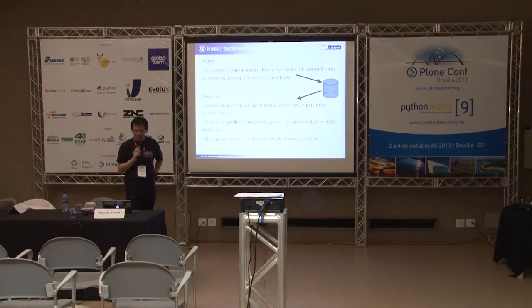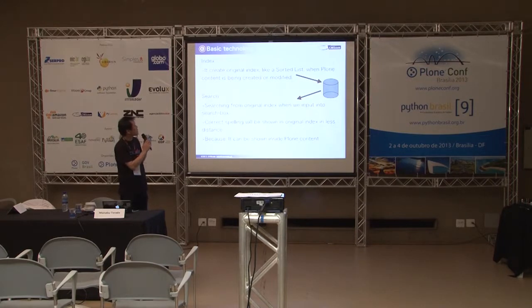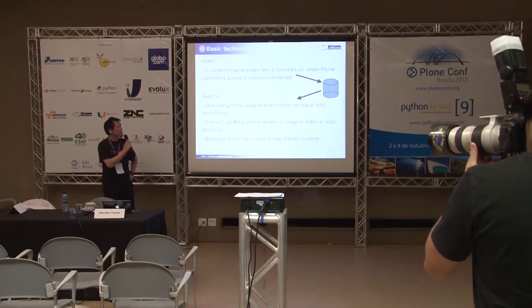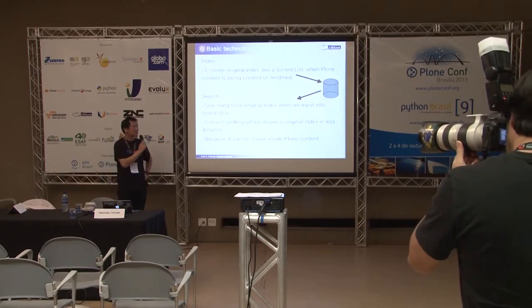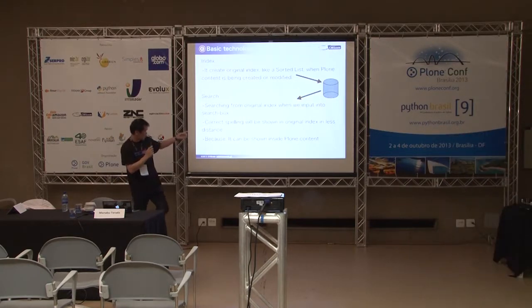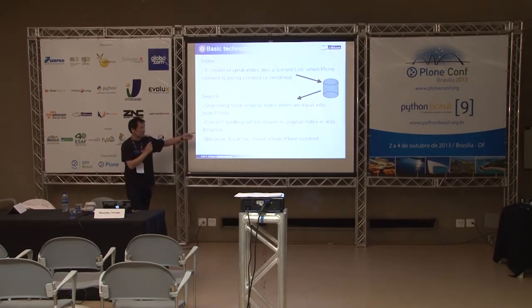Next, I made an index and search system. A search engine needs several parts. The index creates an original index like a sorted list when Plone content is being created or modified. The search checks the original index when we input into the search box. Correct spellings will be shown from the original index with the least distance, shown inside Plone content.